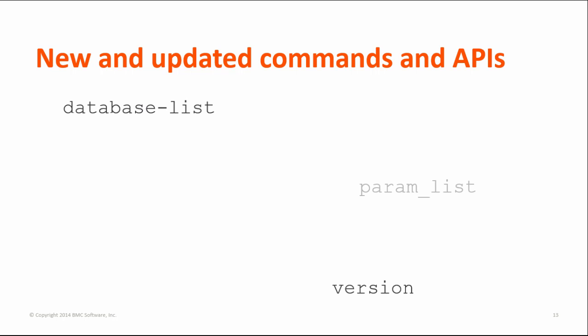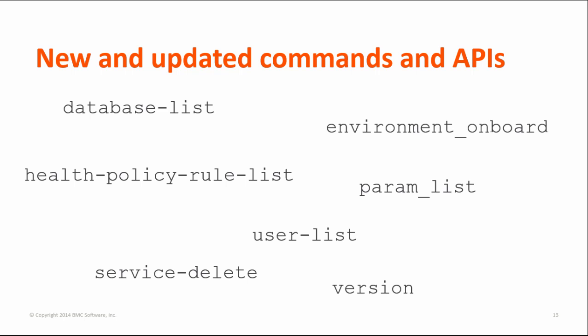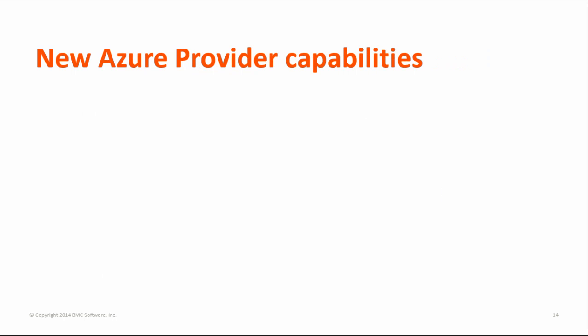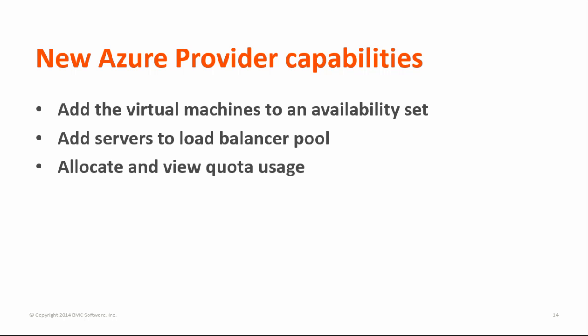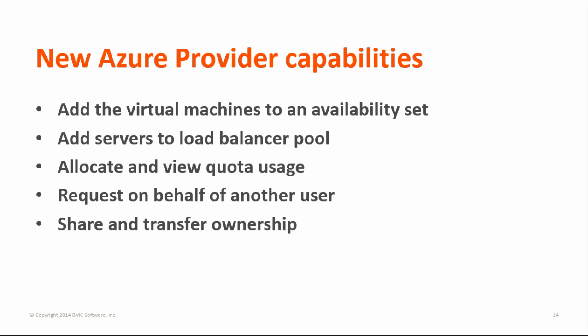Many commands and APIs were added and updated in BMC Cloud Lifecycle Management 4.1. These are just a few. Azure providers can now add virtual machines to an availability set during provisioning and manage the availability of an application that uses multiple VMs. Additional capabilities include: add servers to a load balancer pool, allocate and view tenant and user quota for Azure provider users, request an Azure cloud service on behalf of another user, and share and transfer ownership of an existing Azure cloud service.